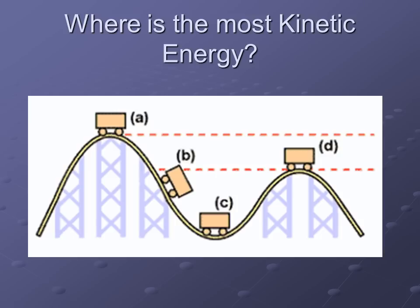On your notes, take a second and draw this roller coaster, and make sure you put the letters A, B, C, and D in the correct spots. You don't have to draw the cars and make it look perfect, but just make sure you've got one hill that's tallest first, and then have the next hill be shorter. If you do that, you'll have a pretty good picture.